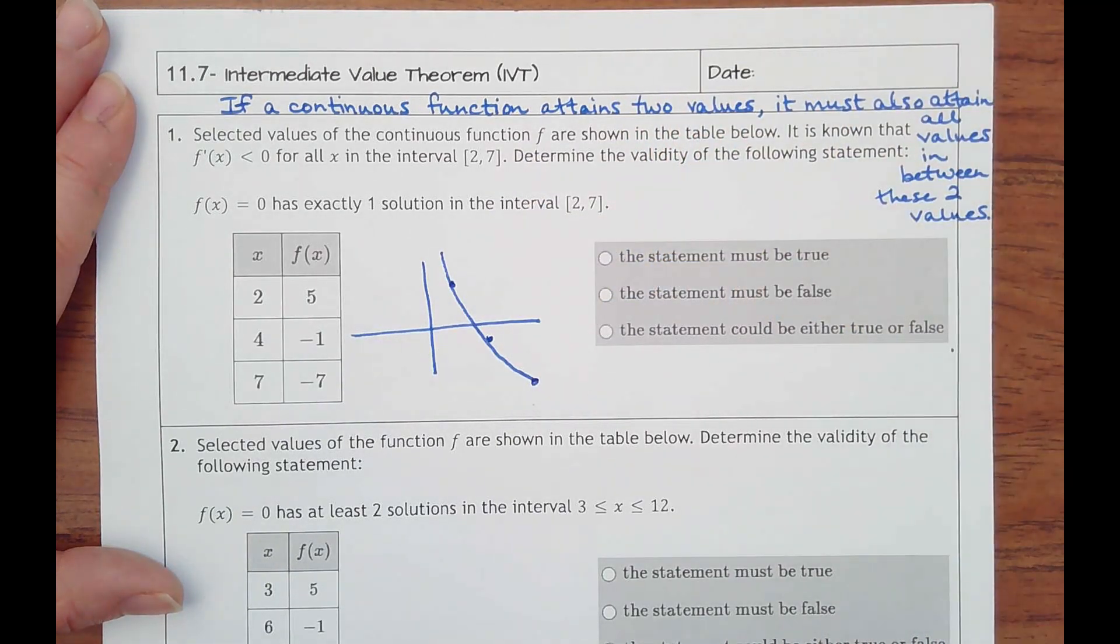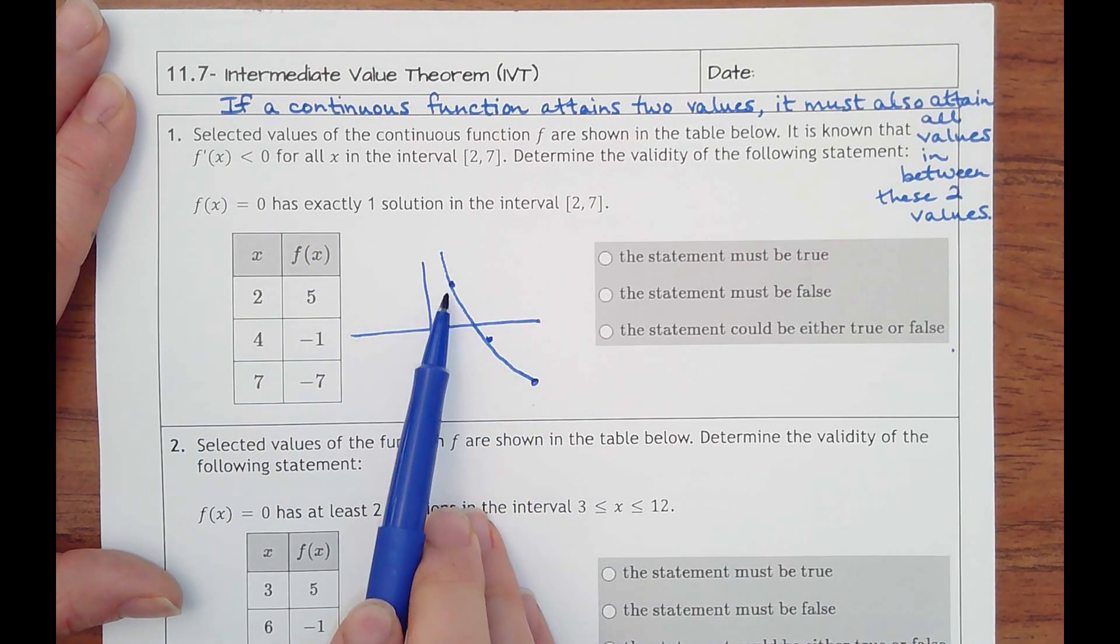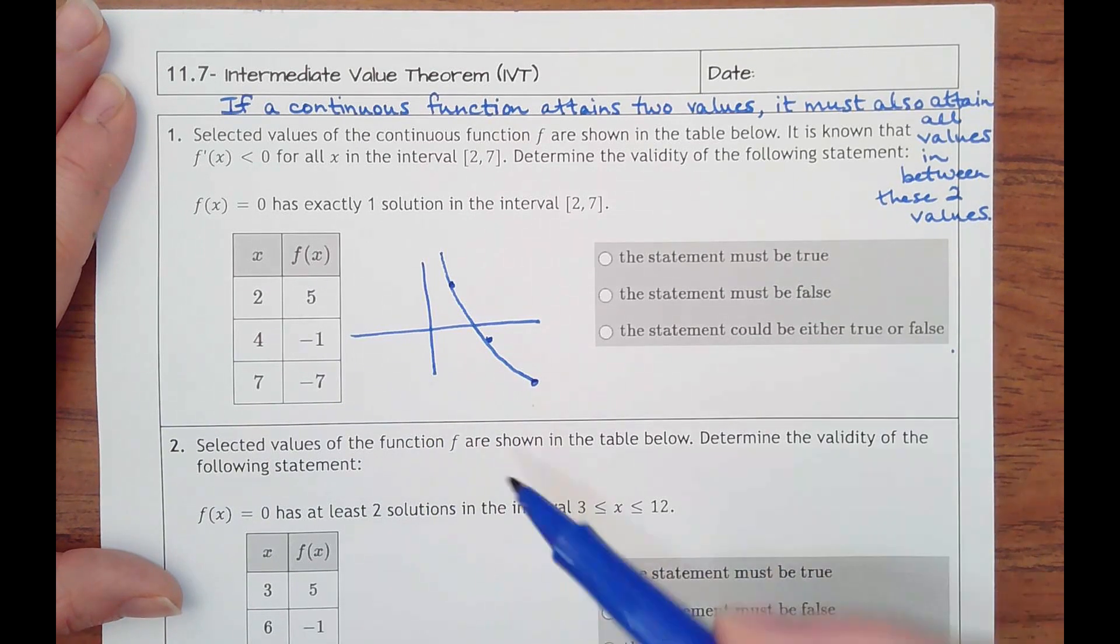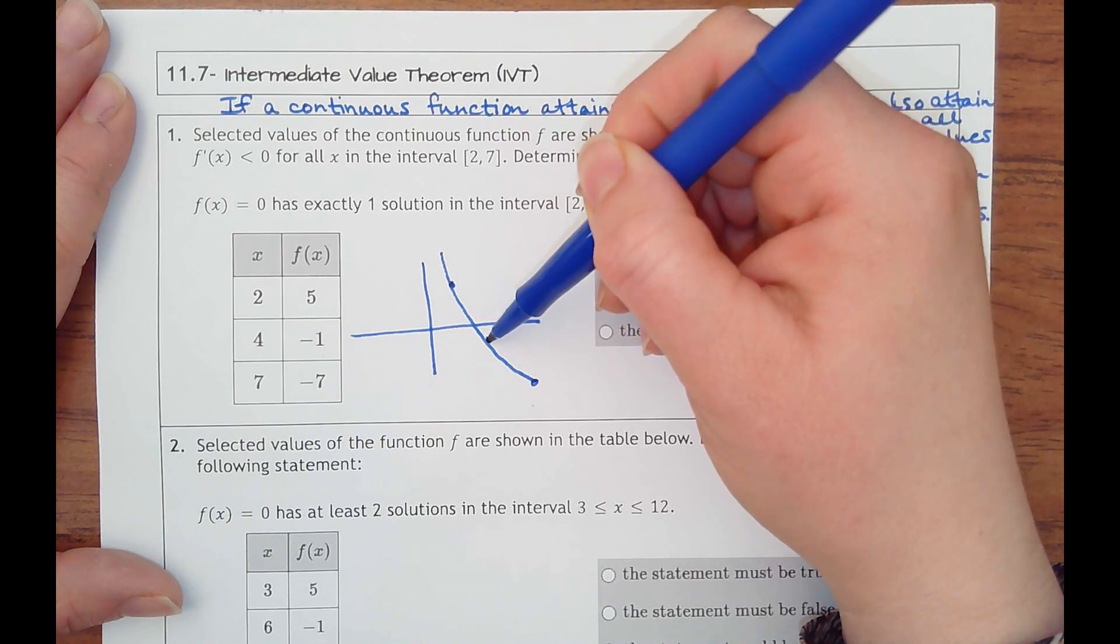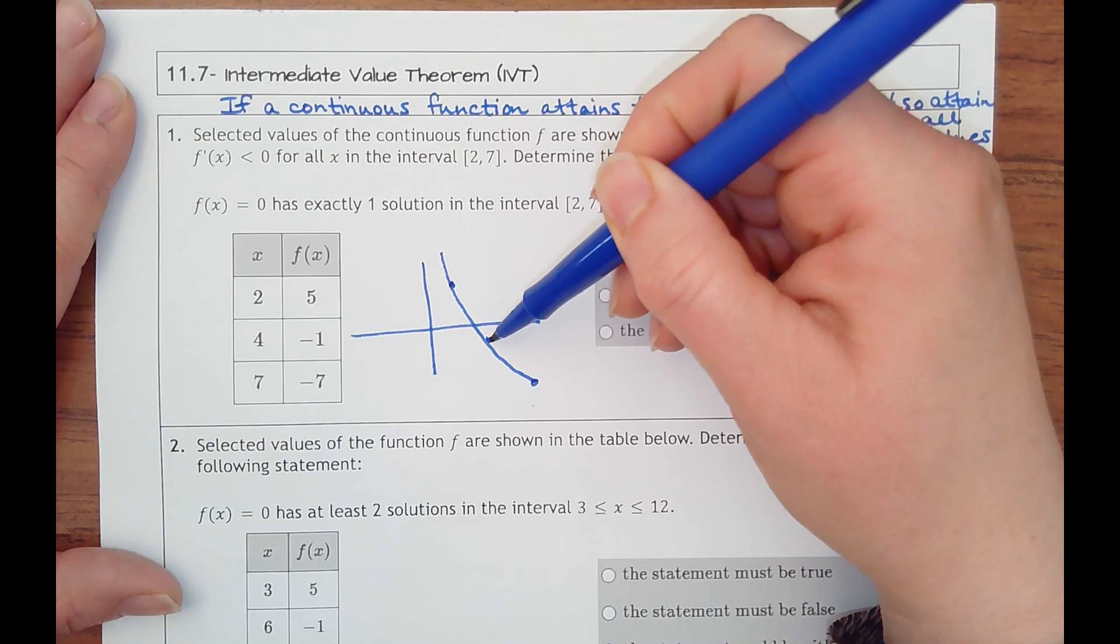And so what this definition means is it's continuous, it attains these values, it must also attain values in between them. So saying between y is five and y is negative one, there has to exist values between those two. And same thing for negative one and negative seven.